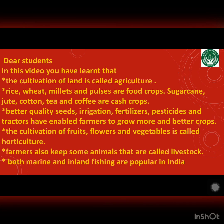Dear students, in this video you have learnt that the cultivation of land is called agriculture. Rice, wheat, millets and pulses are food crops. Sugarcane, jute, cotton, tea and coffee are cash crops. Better quality seeds, irrigation, fertilizers, pesticides and tractors have enabled farmers to grow more and better crops. The cultivation of fruits, flowers and vegetables is called horticulture. Farmers also keep some animals that are called livestock. Both marine and inland fishing are popular in India.